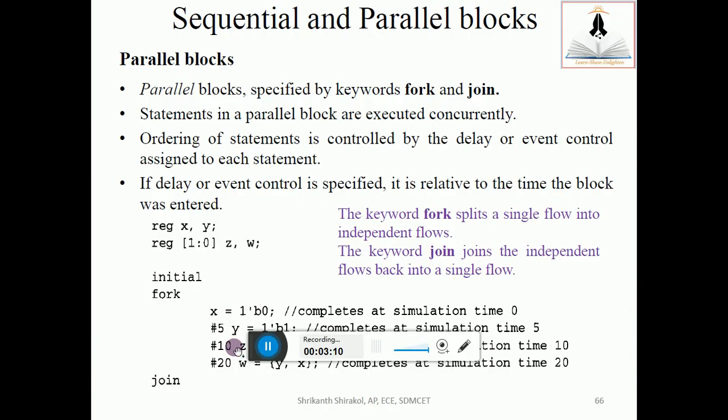Now let us check what happens if it is a parallel block. Parallel blocks are specified by the keywords fork and join. Statements in parallel blocks are executed concurrently, meaning parallelly. If delay or event control is specified, it is relative to the time the block was entered. The keyword fork splits a single flow into independent flows. The keyword join joins the independent flows back to the single flow.